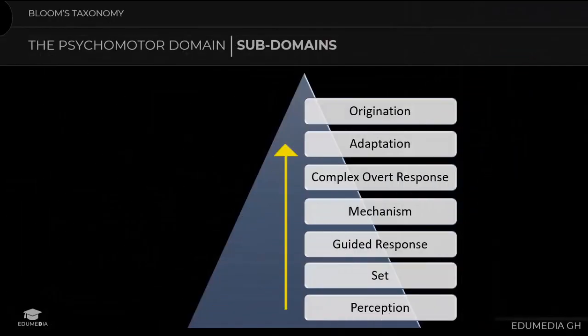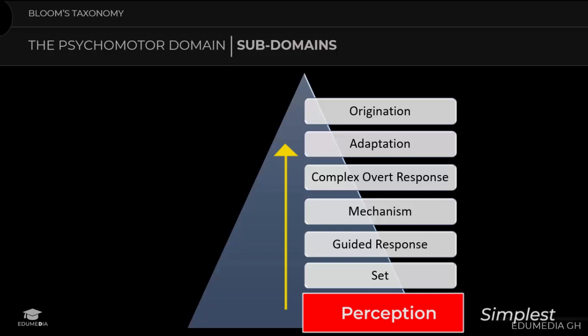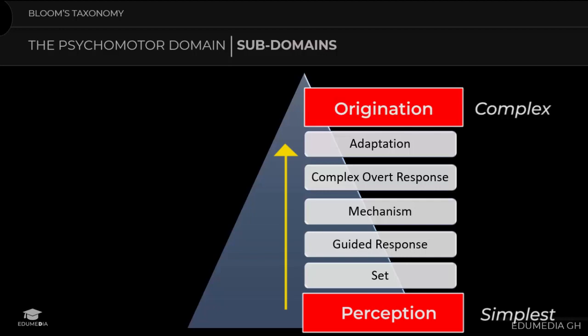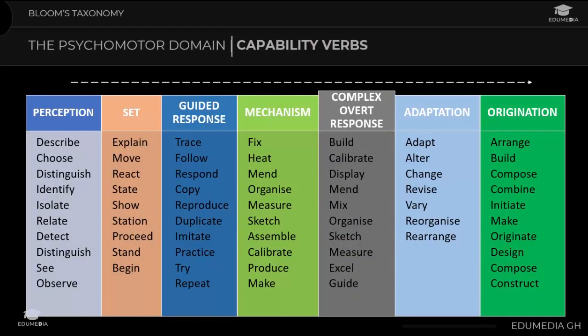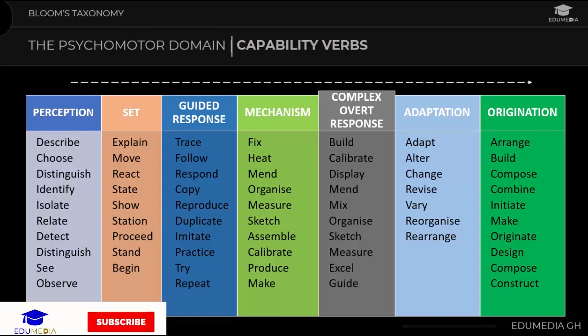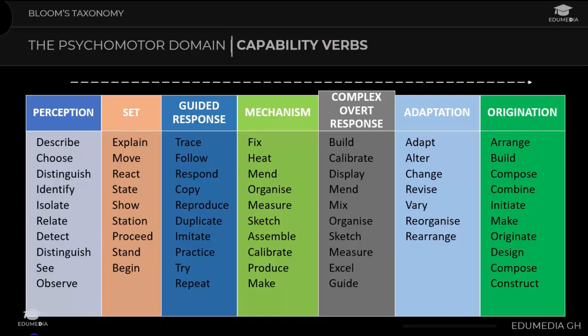There are seven major categories listed under the psychomotor domain, ranging from the simplest behavior — perception — to the most complex — origination. You can pause the video and go through the verbs for each subdomain. Familiarizing yourself with these verbs will help in constructing your own objectives and identifying what an objective is trying to ascertain from a learner.